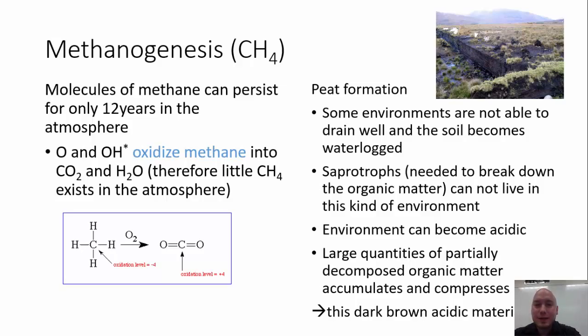Peat formation: Some environments are not able to drain well and the soil becomes waterlogged. Saprotrophs, needed to break down the organic matter, cannot live in that kind of environment. The environment can become very acidic. Large quantities of partially decomposed organic matter accumulate and compress. This dark brown acidic material is called peat.